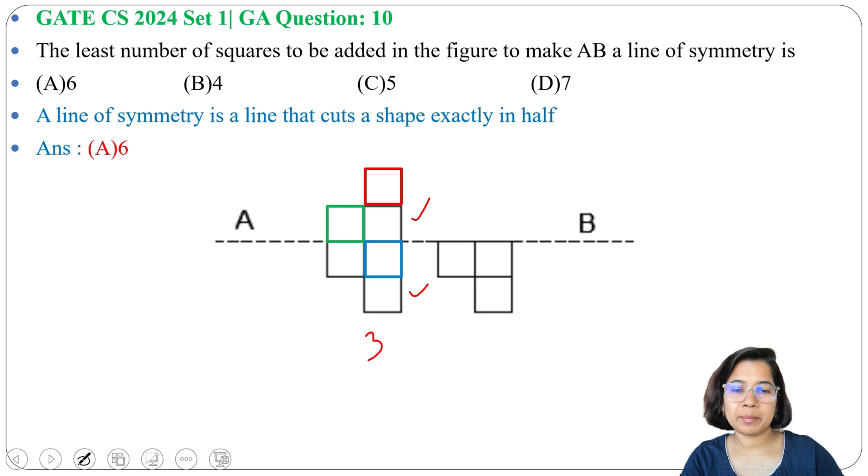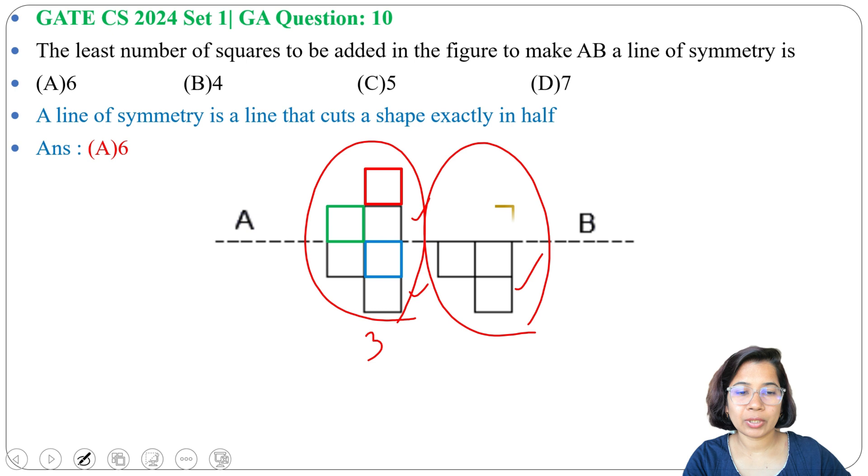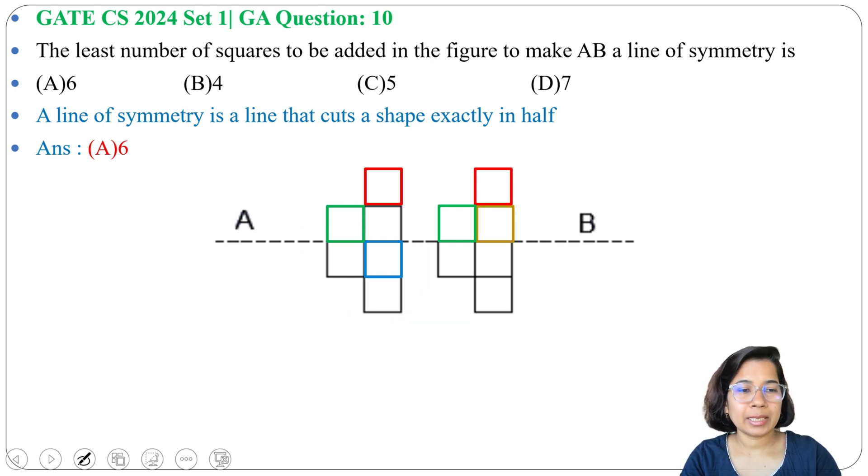Now we will do this second structure. Here in the below side there are 3 squares, so on top we will create 3 squares that will be the same as below. So here 3 plus 3, the answer will be 6. This is easy if you understand this line of symmetry.